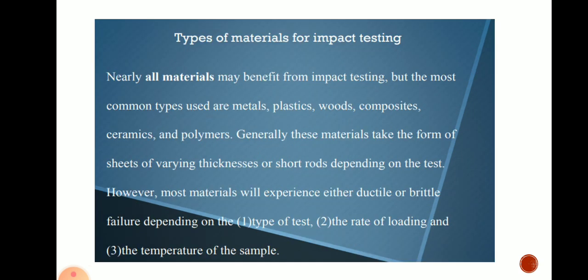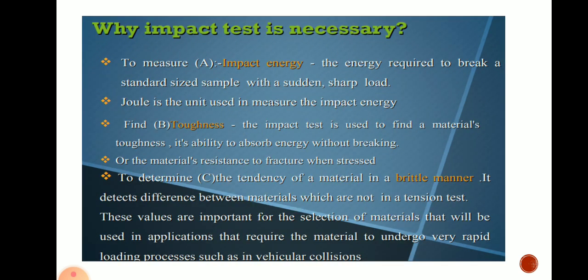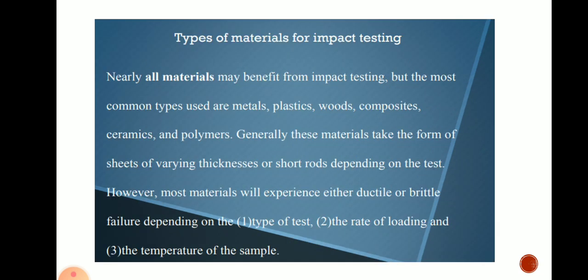By using the impact test, we can test materials such as metals, plastics, wood, composites, ceramics, and polymers. We can find these three parameters — impact energy, toughness, and behavior — for all these materials. However, most materials will experience either ductile or brittle failure depending on the type of test, rate of loading, and temperature of the sample. These three parameters affect the behavior of the material.